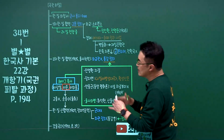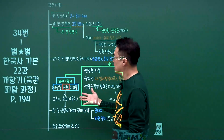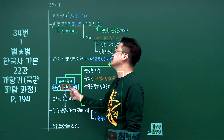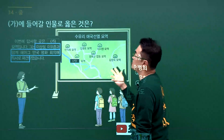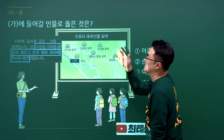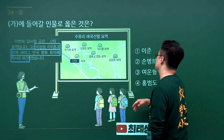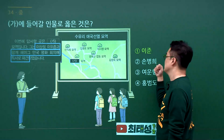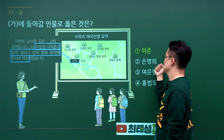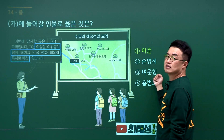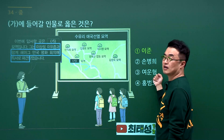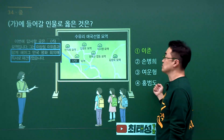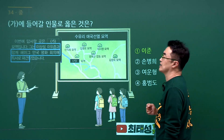헤이그 특사 문제입니다. 헤이그 특사로 이상설, 이준, 이위종이 파견되었습니다. 문제에서 가에 들어갈 인물로 이상설과 이위종이 나왔으니 이준을 고르시면 됩니다. 송병준은 천도교, 여운형은 조선건국준비위원회, 홍범도는 봉오동 전투와 연결됩니다. 정답은 1번입니다.